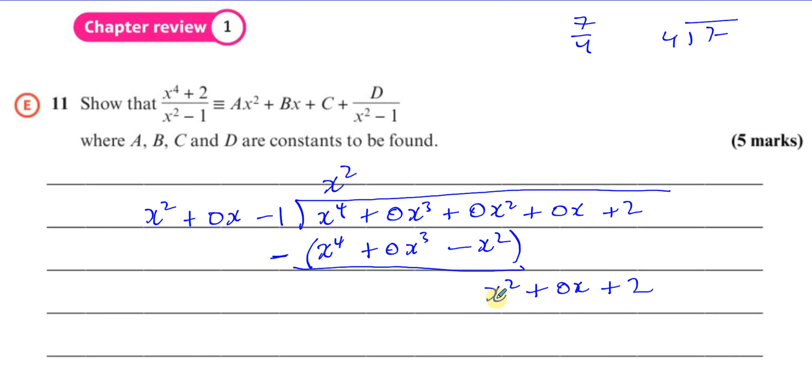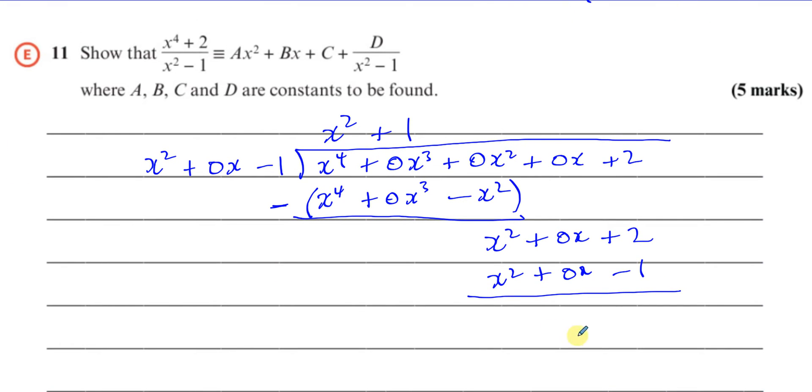Then I say x squared into x squared goes plus 1 time. 1 times x squared is x squared. 1 times 0x is 0x. And 1 times minus 1 is minus 1. Now I subtract. There's nothing left to bring down. So this will be the remainder. Whatever's left here is going to be the remainder, which is what goes up there. So that gives you 0, that gives you 0. Now we've got 2 minus minus 1, which is 2 plus 1, which is 3.